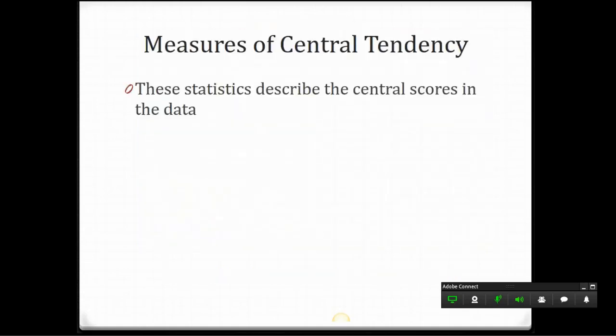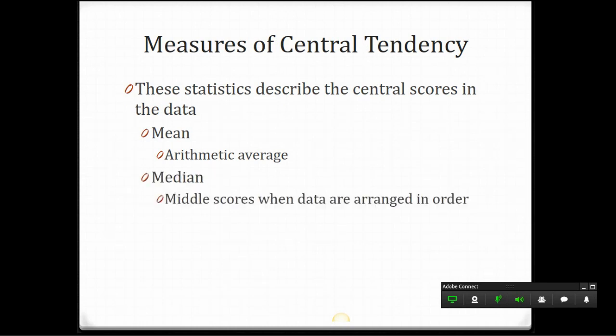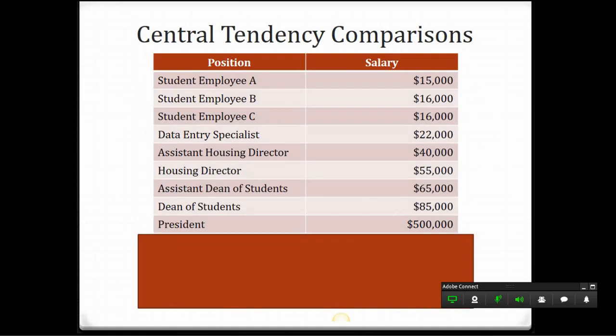Measures of central tendency describe the central scores in the data, and there's three types of statistics that help us to understand what is the center point of our data. Probably the most commonly used is the mean, and that's the mathematic average. Then we have the median, which when we arrange all of our data in order, it's the very middle score or variable. And then finally the mode, and that's the most frequently occurring score in our data set. Those three have very different implications depending upon our data, and it's really challenging sometimes to answer the question, what's the center point of your data?